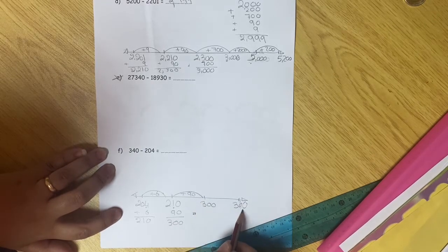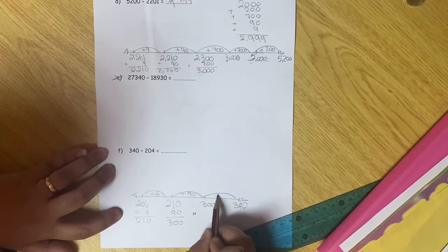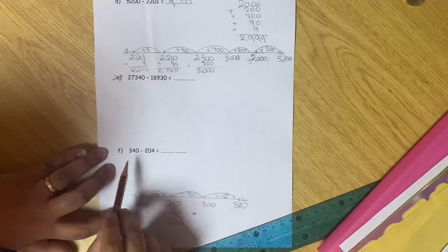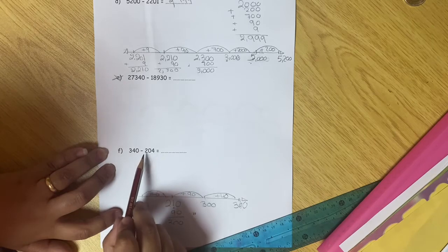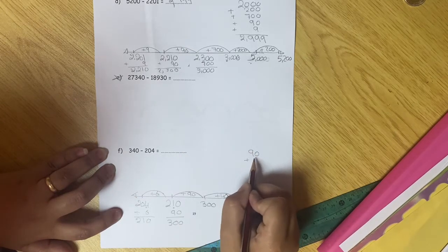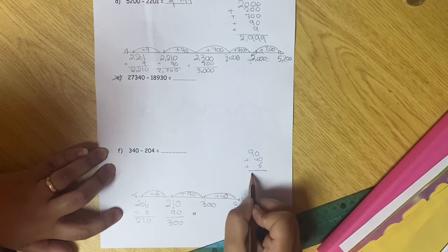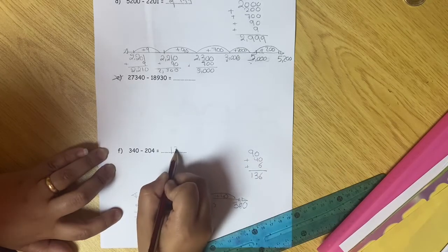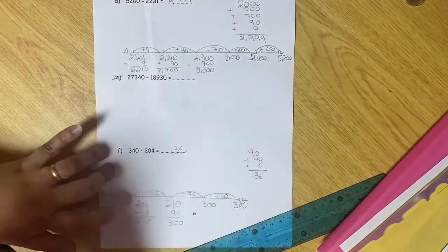At the end, what's left to reach 340? The 40, so I will do plus 40. So here, the difference between 340 minus 204 is 90 plus 40 plus 6, so it will be 136. That's it. Thank you.